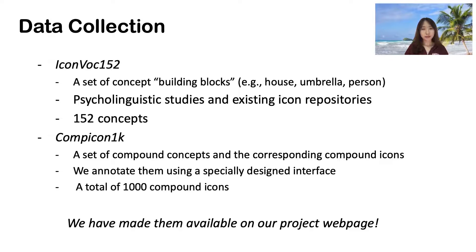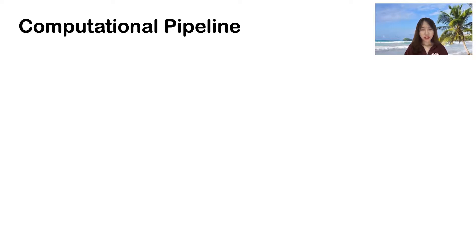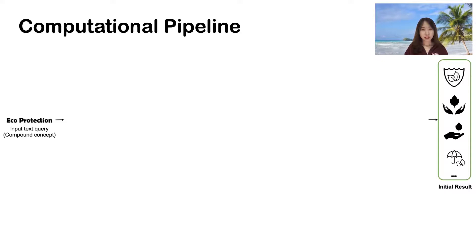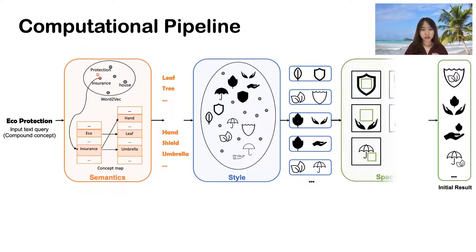Then, let me introduce our computational pipeline. Given the concept of compound concepts as text input, our computational pipeline aims to generate a ranked list of compound icons by considering three main factors: semantics, style, and space.